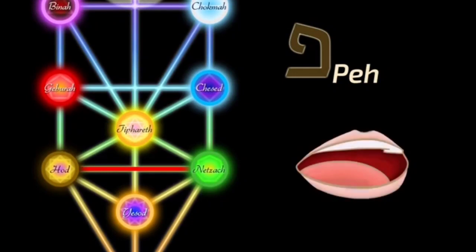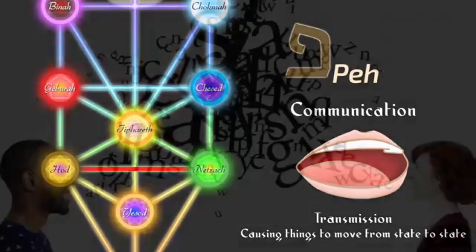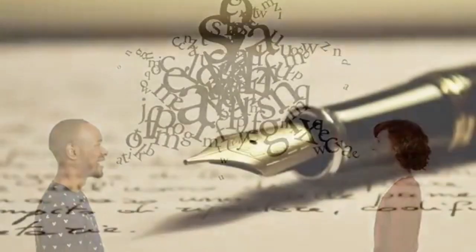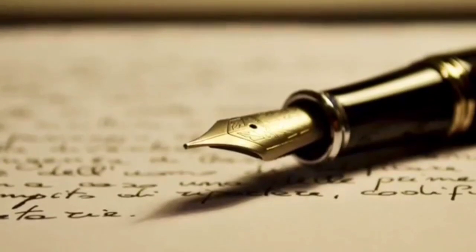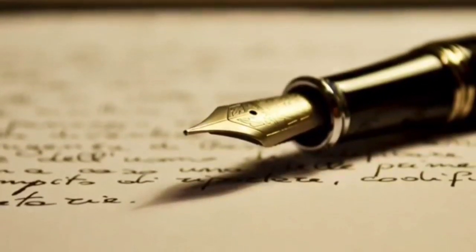The seventeenth path: Pei. Pei translates to mouth and this is the pathway of communication. In a cosmic sense, it is the power of transmission — the power of causing something to pass from one state to another. For us, it is the power of speech, and teaches us to view our words as being as precious as gold, to treat them with respect, and to recognize the power they have in their influence over ourselves and others.